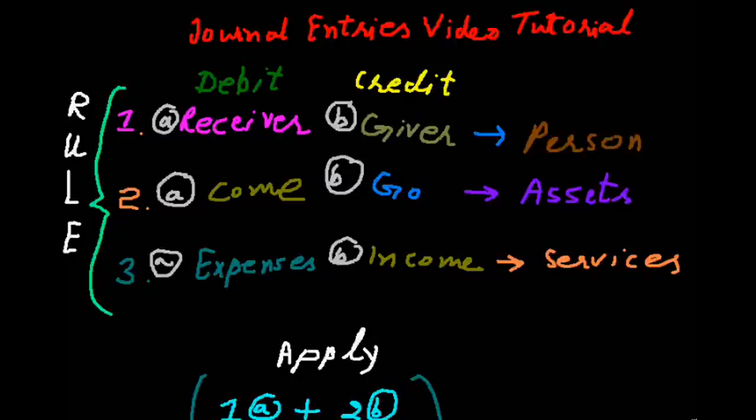If any asset comes into the business, it will be debit. If any asset goes from the business, it will be credit. If we get services or pay for services, these are expenses. If we provide services or receive money for providing services, it will be our income.